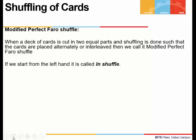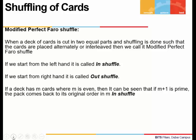When we shuffle a pack of cards, it is in a particular order. After shuffling, the order gets disturbed. What we are going to study is: in how many shuffles does the deck of cards come back to its original order? If we start from our left hand, we call it in-shuffling. If we start from our right hand, we call it out-shuffling.